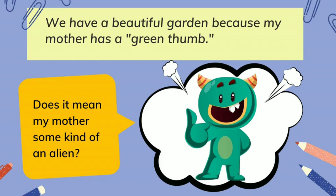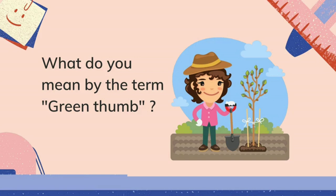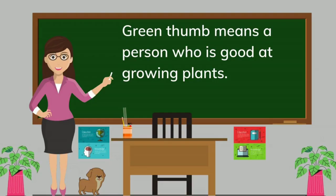We have a beautiful garden because my mother has a green thumb. Does it mean that my mother is some kind of an alien? Green thumb means a person who is good at growing plants.